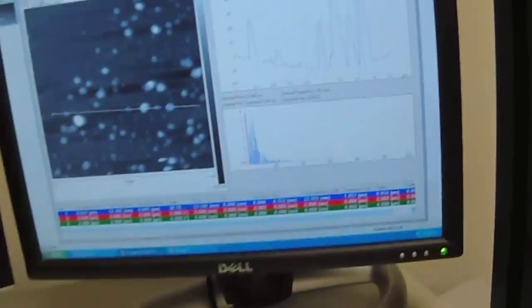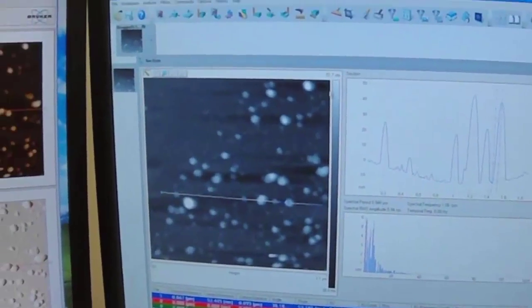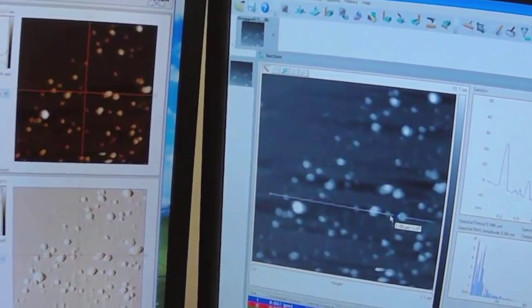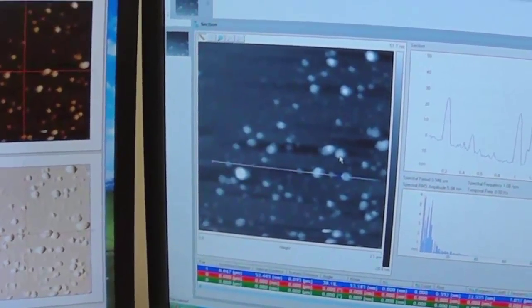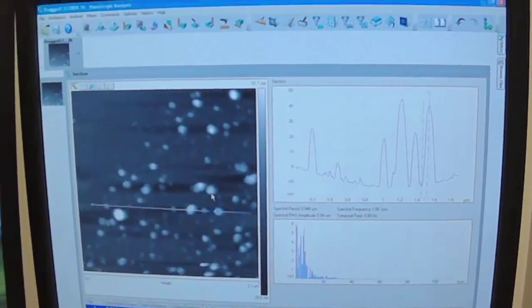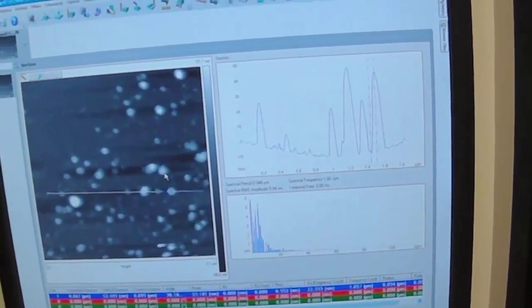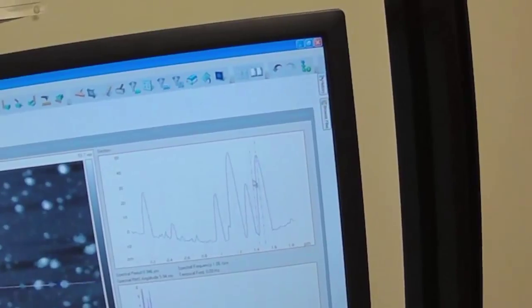So that's one particle. We want to start making a data table and measure as many of these particles as you can within a reasonable amount of time. You can't measure all of these particles, but the more you measure, the better your statistics are going to be to determine what is the average size of a particle and what is the particle size distribution.